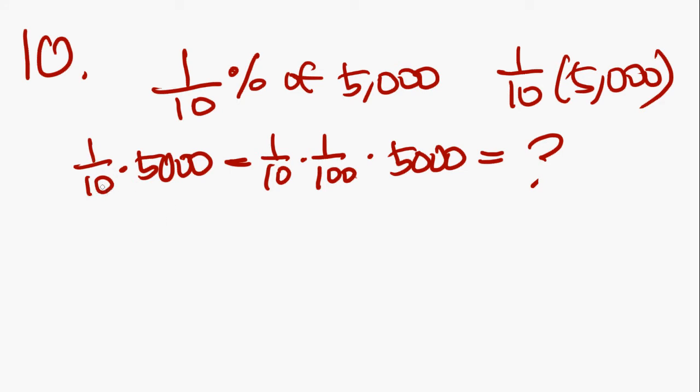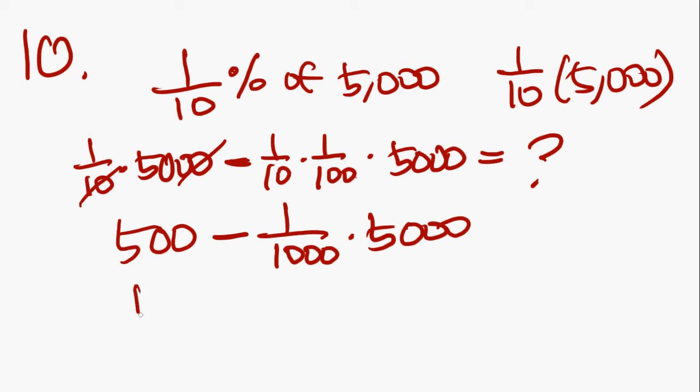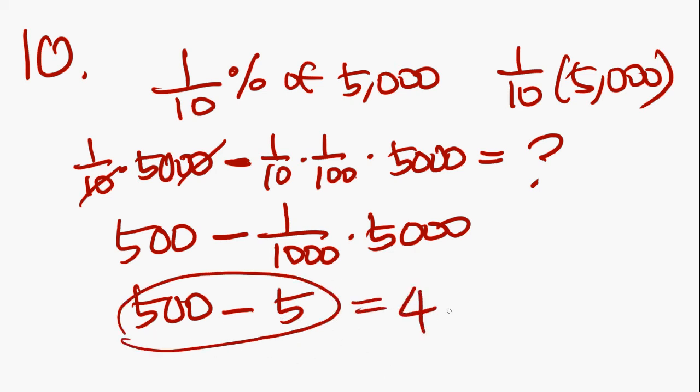So, in this case, here, let's see. Let's take out the 0 and you get 500 minus 10 times 100 is 1,000 times 5,000 is 500 minus... 5,000 divided by 1,000 is 5. That's pretty easy. 500 minus 5 equals 495. And that is D.